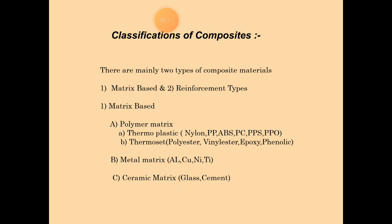First is polymer matrix, which has two types: thermoplastics and thermosets. Thermoplastics consist of nylon, EP, ABC, PC, PPS, and PPO. Thermosets include polyester, vinylester, epoxy, and phenolic.